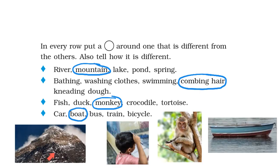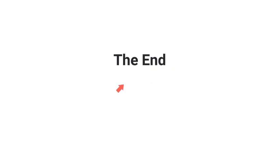We see pictures of a mountain, a boy combing his hair, a monkey on a tree, and a boat on water. With this, we come to the end of this lesson. In this lesson, we learnt the various sources of water and also the various containers and ways in which we can store water.